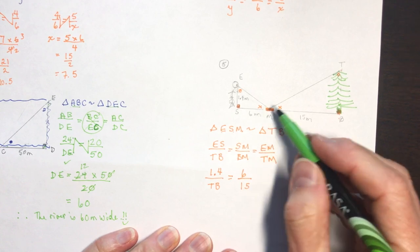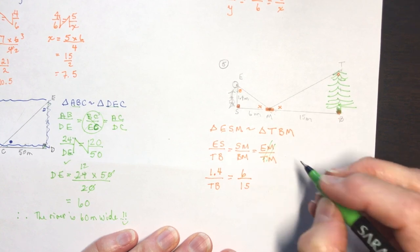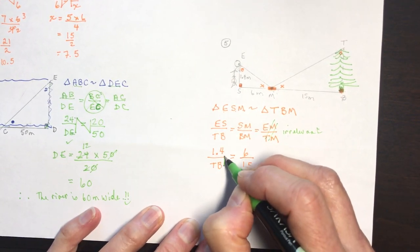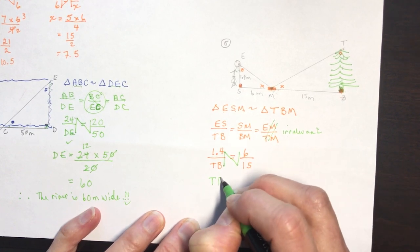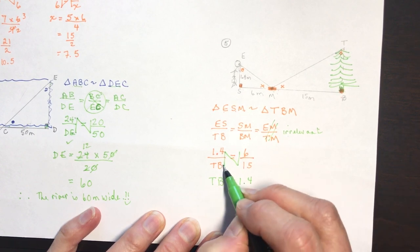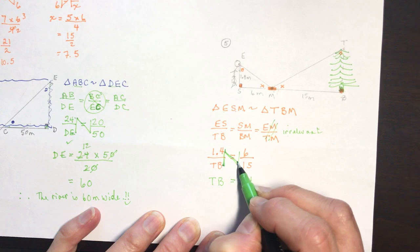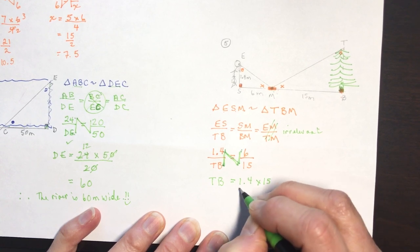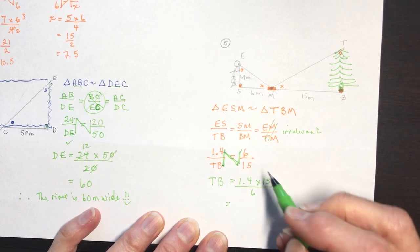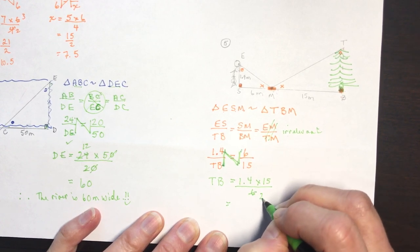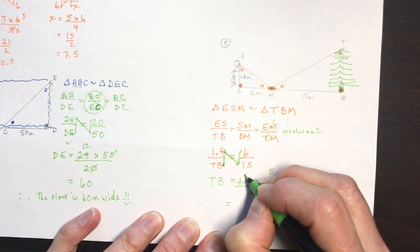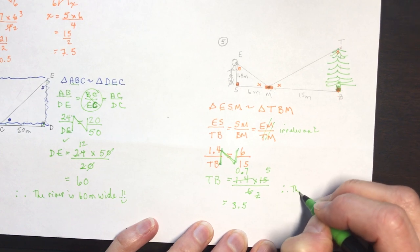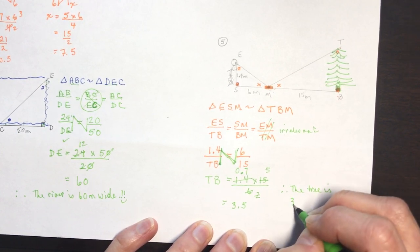Write the ratios: ES is to TB, as SM is to BM, as EM is to TM. ES (eye height) is 1.4 meters, TB is the unknown tree height, SM is 6 meters, BM is 15 meters. So: 1.4 is to TB as 6 is to 15. Using the N-method: TB equals 1.4 times 15 divided by 6. Dividing 3 into 6 and 15, then 2 into 2 and 1.4, gives 0.7 times 5 = 3.5. Therefore, the tree is 3.5 meters tall.